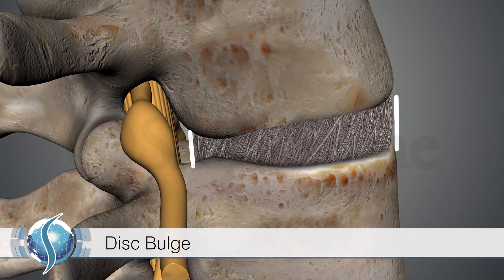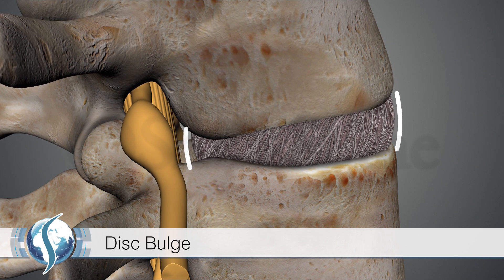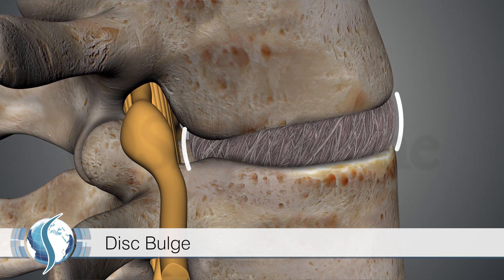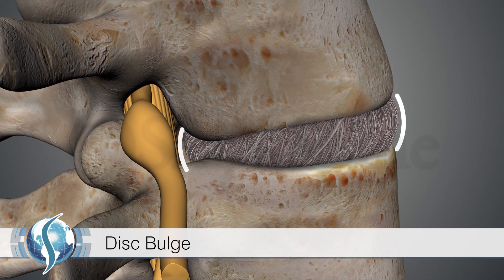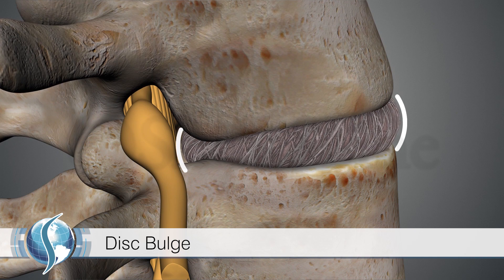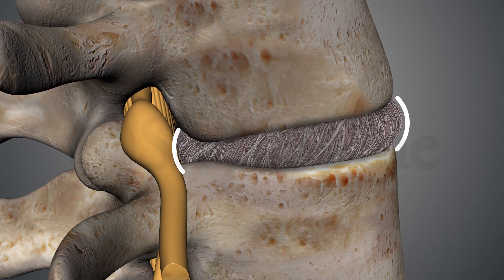In a disc bulge, the central portion of the disc — the nucleus — dries out over time. The pressure from the disc material decreases and the sidewalls of the disc bulge out. This is a gradual process.